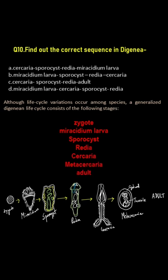Although life cycle variations occur among species, a generalized Digenian life cycle consists of the following stages: Zygote, Miracidium larva, Sporocyst, Redia, Cercaria, Metacercaria, and Adult.